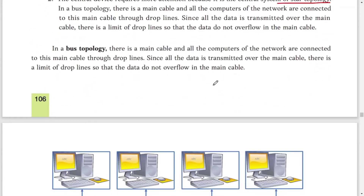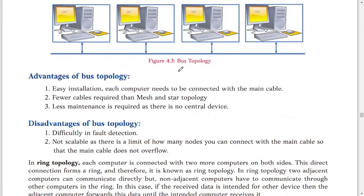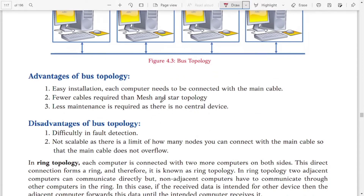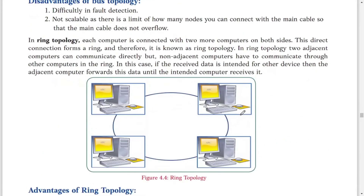In bus topology, there is a main cable to which all computers on the network are connected. Since all data is transmitted over one cable, there is a limit on throughput — the network can slow down because all computers share just one cable. Advantages: easy to install, fewer cables required compared to mesh and star, and less maintenance is required. Disadvantages: it is difficult to find a fault, and it is not scalable as there is a limit to how many nodes can be connected.